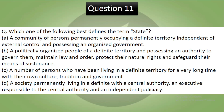Question 11: Which one of the following best defines the term 'state'? This is as per Article 12. Options: A community of persons permanently occupying a definite territory, independent of external control and possessing an organized government; a politically organized people of a definite territory possessing authority to govern, maintain law and order, protect natural rights and safeguard means of subsistence; a number of persons living in a definite territory for a long time with their own culture and traditional government; or a society permanently living in a definite territory with a central authority, an executive responsible to it, and an independent judiciary.